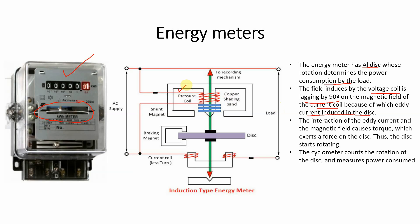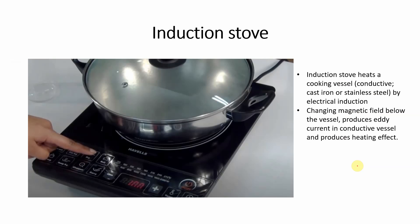Energy meter کے اندر دو coils ہوتے ہیں — ایک pressure coil اور دوسرا current coil — اور یہ دونوں power کی measurement پہ use ہوتے ہیں۔ Voltage coil کے اندر magnetic field 90 degree lag کرتا ہے current سے، اور اسی وجہ سے اس metal disc کے اندر eddy current produce ہوتے ہیں۔ The interaction of eddy current and magnetic field causes a torque which exerts a force on the disk, thus the disk starts rotating۔ ایک cyclometer لگا ہوتا ہے جو disc کی rotation کو count کرتا ہے اور جو power consumed ہے اس کو record کرتا ہے۔